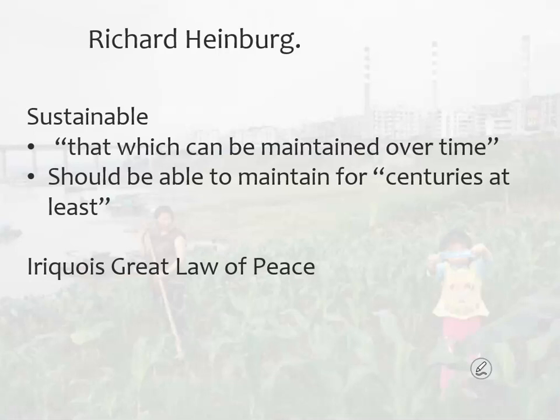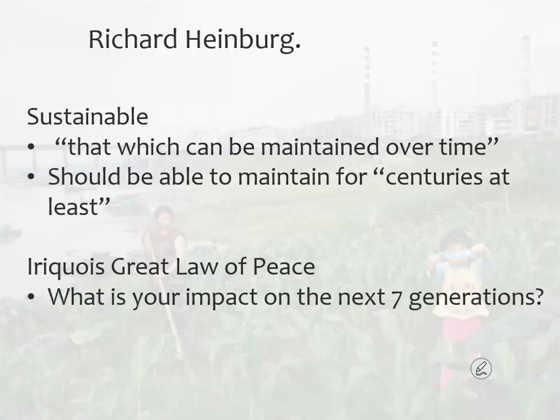Another commonly cited framework is attributed to the Iroquois Great Law of Peace, although that may not be entirely accurate. But the principle is still important. The idea is that if you're doing something now, you want to think about its impact on the next seven generations — on the order of 200 to 250 years. These are just ways to think about sustainability at a very fundamental level: can we continue to do what we're doing for the foreseeable future?